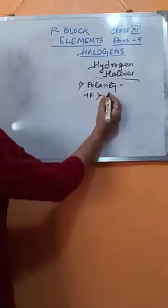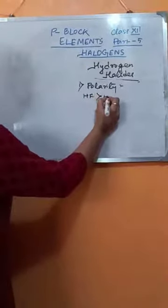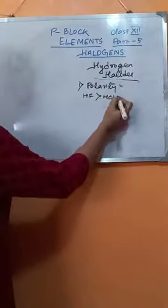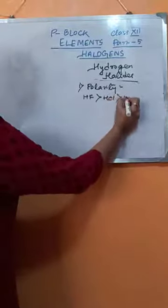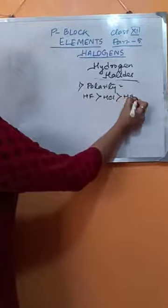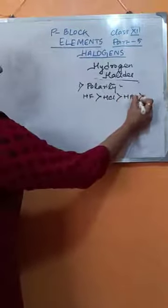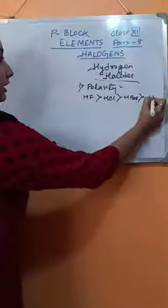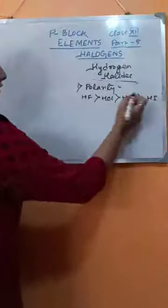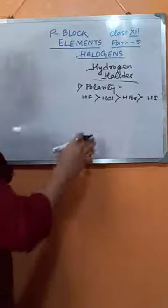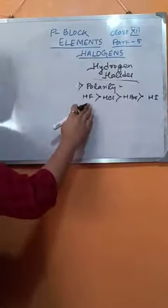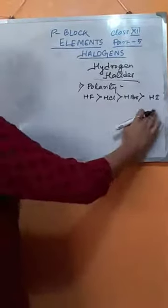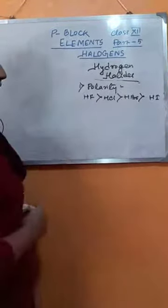The polarity of hydrogen fluoride is more than that of HCl, which is more than that of HBr, which is more than that of HI. So the polarity of the hydrogen halides decreases in this order.